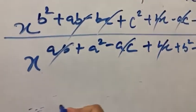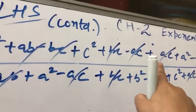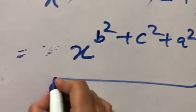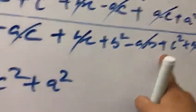So we will be having now X raised to power B square plus C square plus A square, B square plus C square plus A square, and in the denominator A square plus B square plus C square.